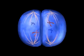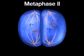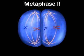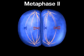During metaphase II, the chromosomes, still made up of sister chromatids, line up at the equator.